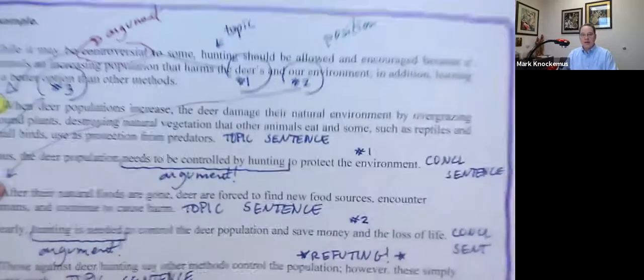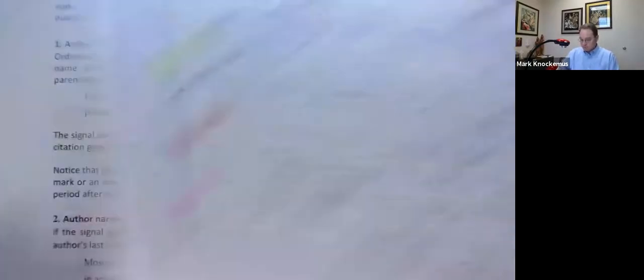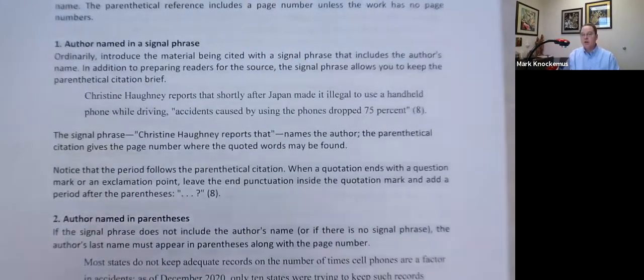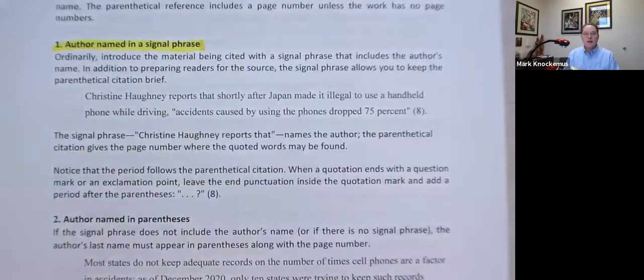Remember, you've got this outline. You want to pull this document up, jump into a paragraph, and then start to pull information from your research into your paper. One way that we're going to do this is the author will be named in a signal phrase. What a signal phrase does, it introduces the material being cited to the reader. The most common way to do this is include the author's name. Why do we do this? It prepares the reader for the source, and allows you to keep the citation brief. Here we go.